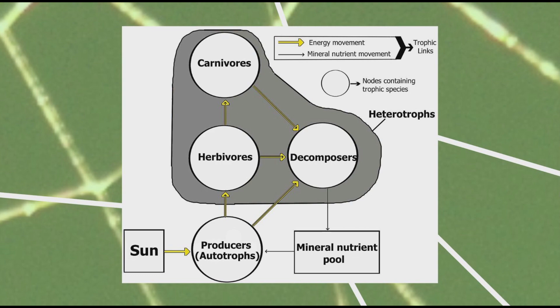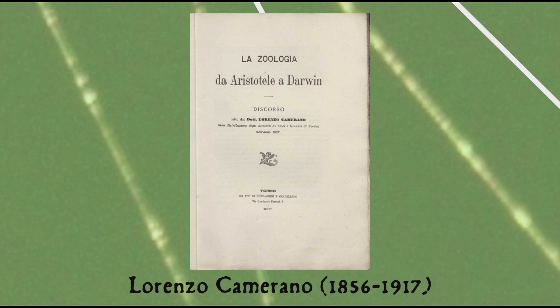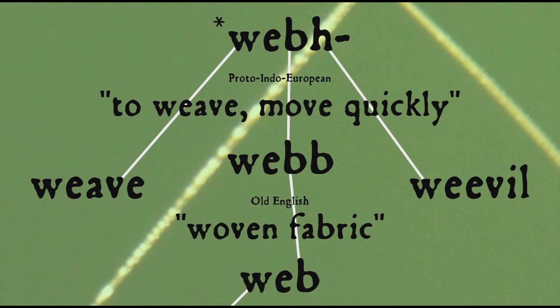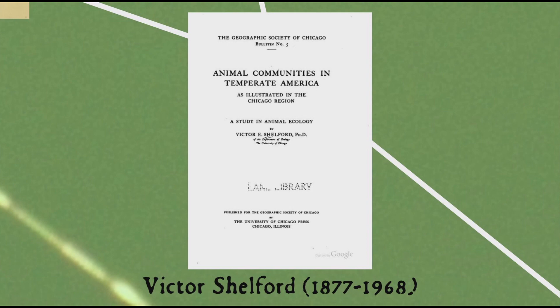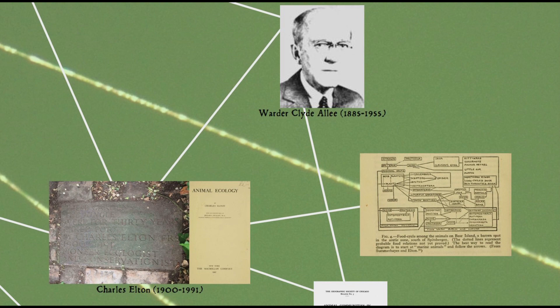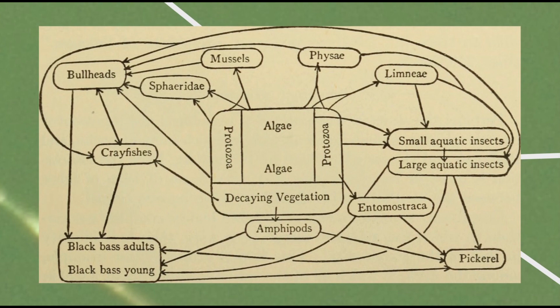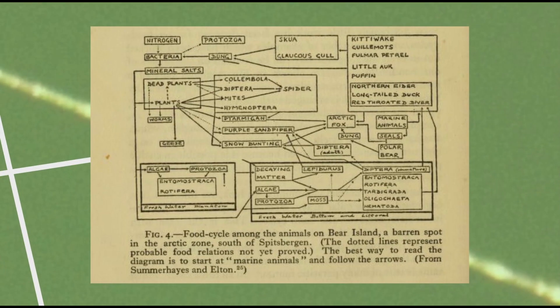The first to produce such a diagram seems to have been Italian herpetologist and entomologist Lorenzo Camerano, who published a generalized food web diagram in 1880, though no one seems to have picked up immediately on the idea. It wasn't until the early 20th century that a number of other scientists independently hit upon the idea, such as the 1912 illustration depicting the boll weevil complex — perhaps appropriate given that weevil comes from the same root as web in the move-quickly sense. That diagram was a proposal to eradicate the boll weevil, which attacked cotton crops, by encouraging its predators and parasites. The next year, Victor Shelford published a book containing two food web diagrams showing how communities tend toward equilibrium, and later Elton's own book made such diagrams commonplace in the field.